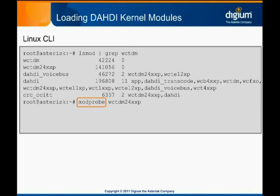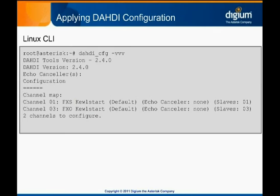Now we can move on and apply the Dottie configuration. Configuration changes in Asterisk aren't applied until we explicitly make Asterisk read the new configuration. The same is true of Dottie. We apply the configuration we've defined by using a tool called DottieConfig, run by issuing the dottie_cfg command on the Linux command line. We recommend running this command with three V flags for verbosity so any warnings or errors are printed to the console. Depending on the Linux distribution and how the Dottie package was installed, DottieConfig may be automatically run when the server is started.